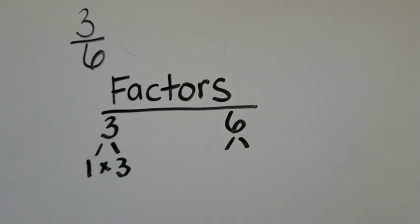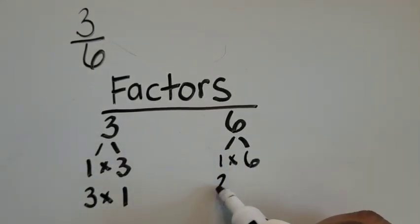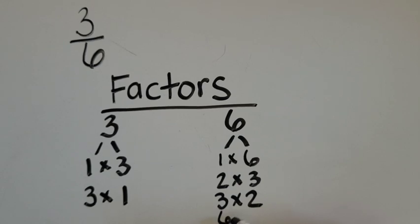So to create 3 as a product, we need to multiply 1 times 3 and 3 times 1. To create 6 as a product, you can multiply 1 times 6, 2 times 3, 3 times 2, or 6 times 1.